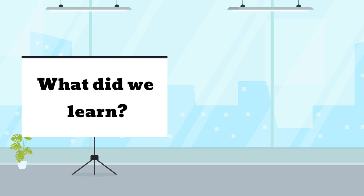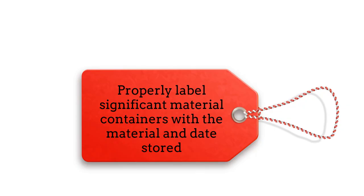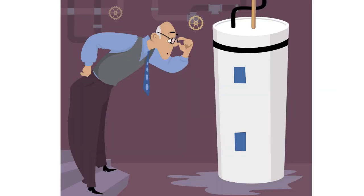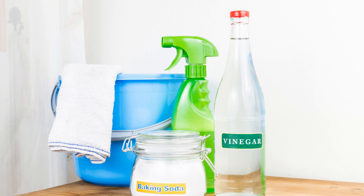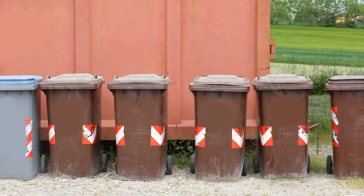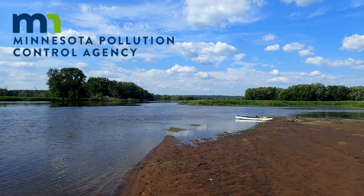As a brief reminder of what we've covered today: properly label significant material containers with the material and date stored; regularly inspect storage containers and areas for leaks, spills, and malfunctions; keep accurate records of significant materials including safety data sheets and shipping manifests; choose less toxic cleaners and paints when possible; and dispose of waste properly — never let it go into a storm drain, ditch, or body of water. Thanks for protecting our water resources.